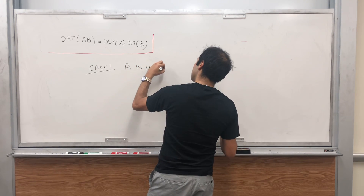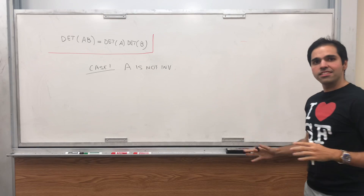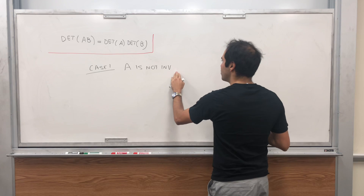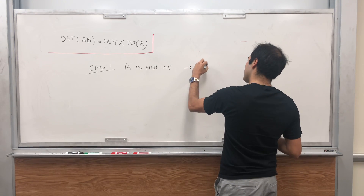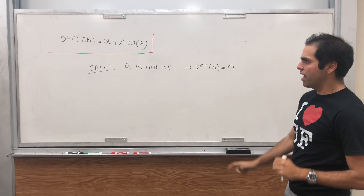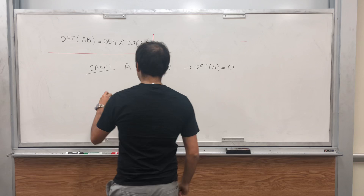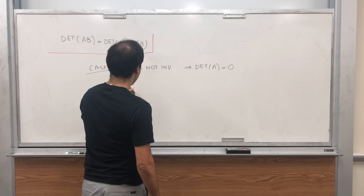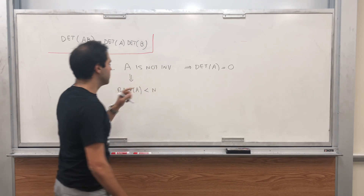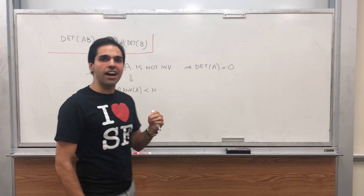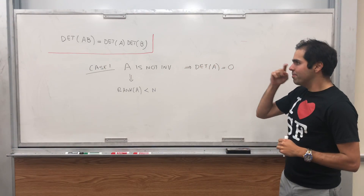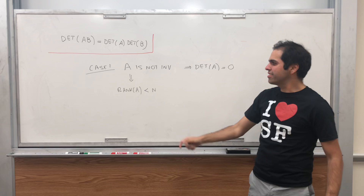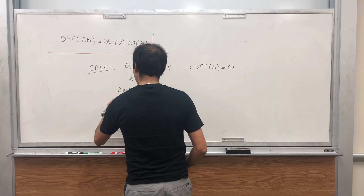A is not invertible. In that case, in another video I have independently shown that this implies that the determinant of A is zero. On the other hand, if A is not invertible, this also implies that the rank of A isn't optimal. So the rank of A is strictly less than N, where N is the size of A. A is N by N here. But here's the thing: the rank under composition can only decrease. So in particular, what do we know about the rank of AB? It's less than or equal to the rank of A.